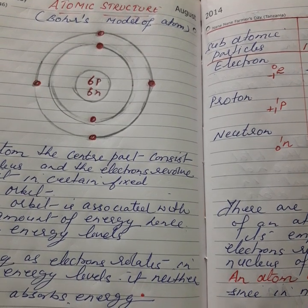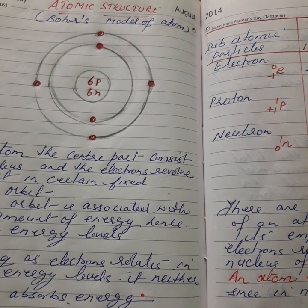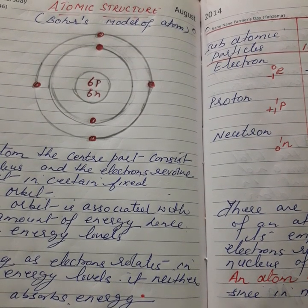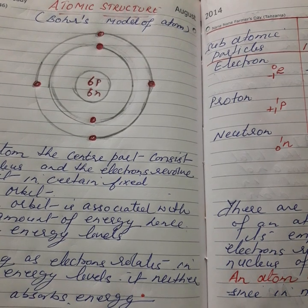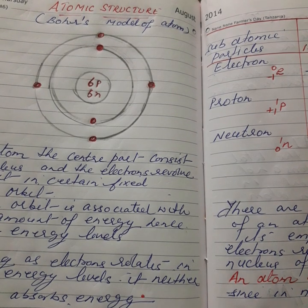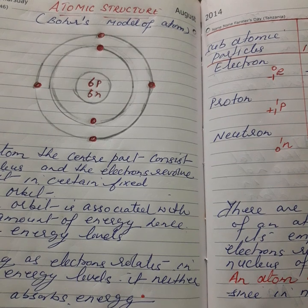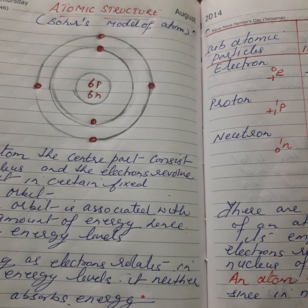Now we will come to the atom. How to define atom? Atom is the smallest particle of an element which can take part in a chemical reaction, and it is considered the basic unit of matter. An atom consists of two regions: the nuclear region and the extra nuclear region.